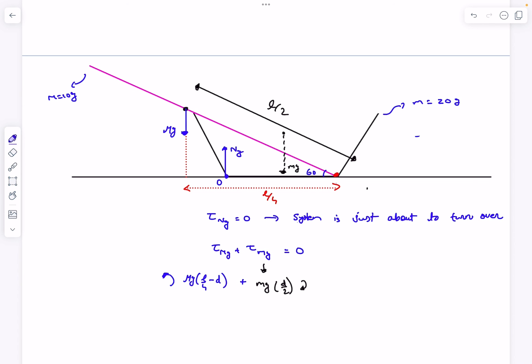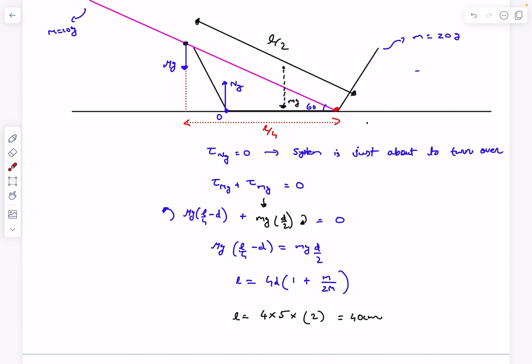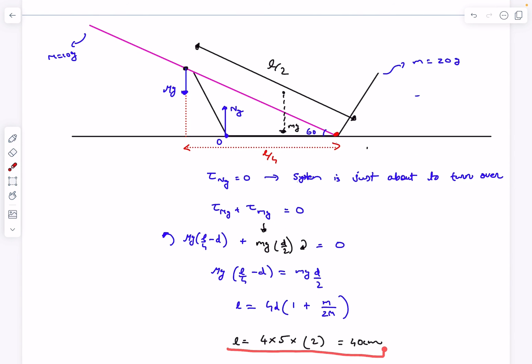We want this to add up to zero. After substituting the values, you'll get the answer for the maximum length as 40 centimeters. If you increase the length even a little bit over 40 centimeters, then the center of mass of the rod will shift further left and the counterclockwise moment will overpower the clockwise moment and the entire structure would topple about point O.